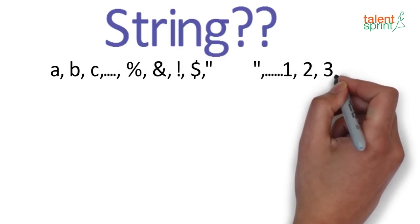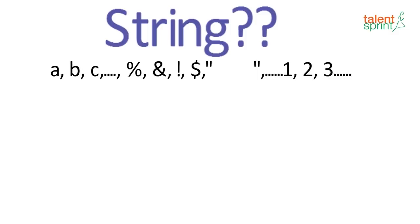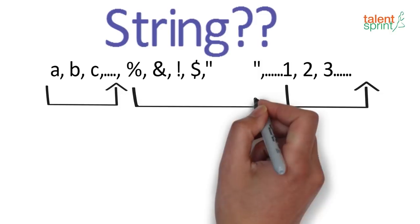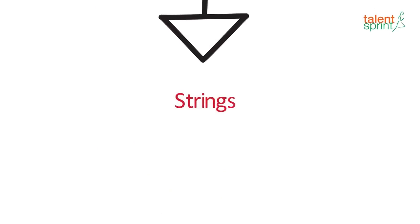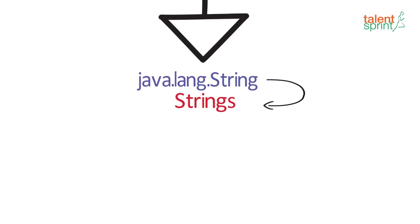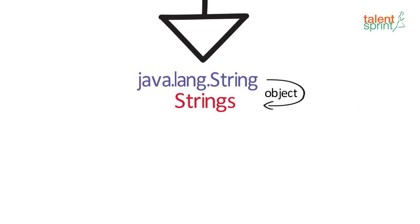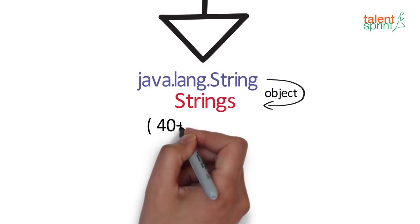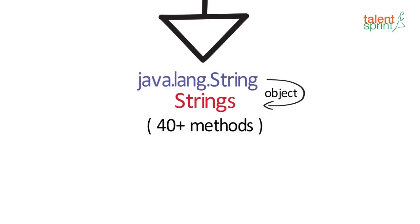Now this character set could include anything ranging from numbers, alphabets to delimiters or even spaces. Strings in Java are objects of the predefined string class java.lang.string. So every time you create a string variable, you are creating an object of this class. String class also provides a lot of methods to work on these strings.